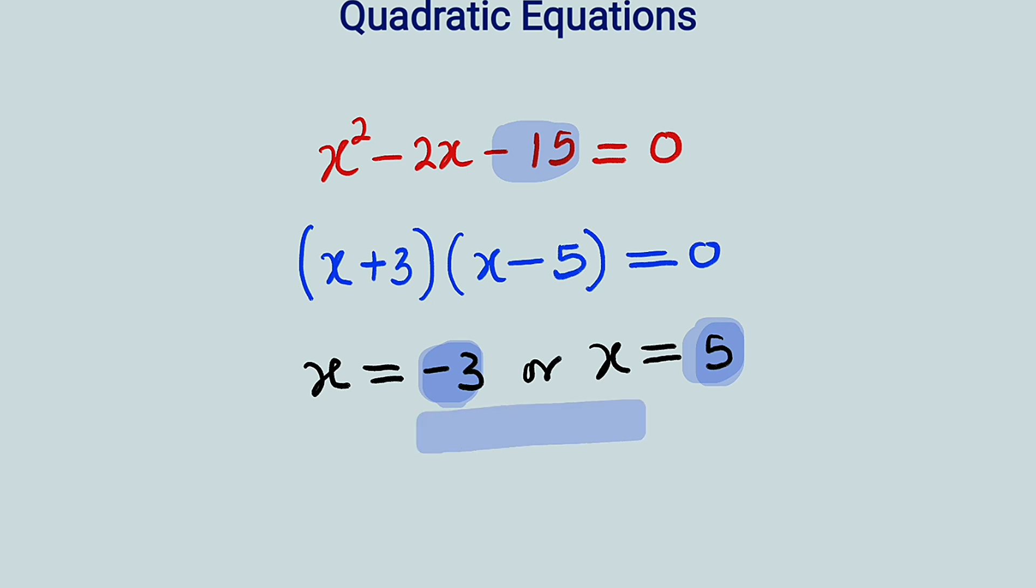And also, if you add them together, you are going to get minus the coefficient of the middle term. And the coefficient of the middle term is minus 2, and minus minus 2 is plus 2. Therefore, you can see that minus 3 plus 5 is equal to plus 2.